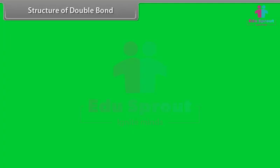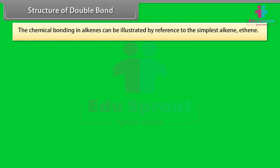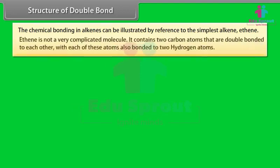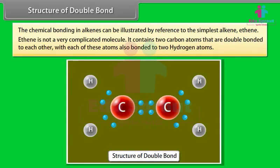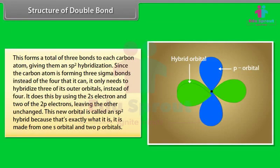The chemical bonding in alkenes can be illustrated by reference to the simplest alkene, ethene. Ethene contains two carbon atoms that are double bonded to each other, with each of these atoms also bonded to two hydrogen atoms. This forms a total of three bonds to each carbon atom, giving them an sp2 hybridization. Since the carbon atom is forming three sigma bonds instead of four, it only needs to hybridize three of its outer orbitals. It does this by using the 2s electron and two of the 2p electrons, leaving the other unchanged. This new orbital is called an sp2 hybrid.